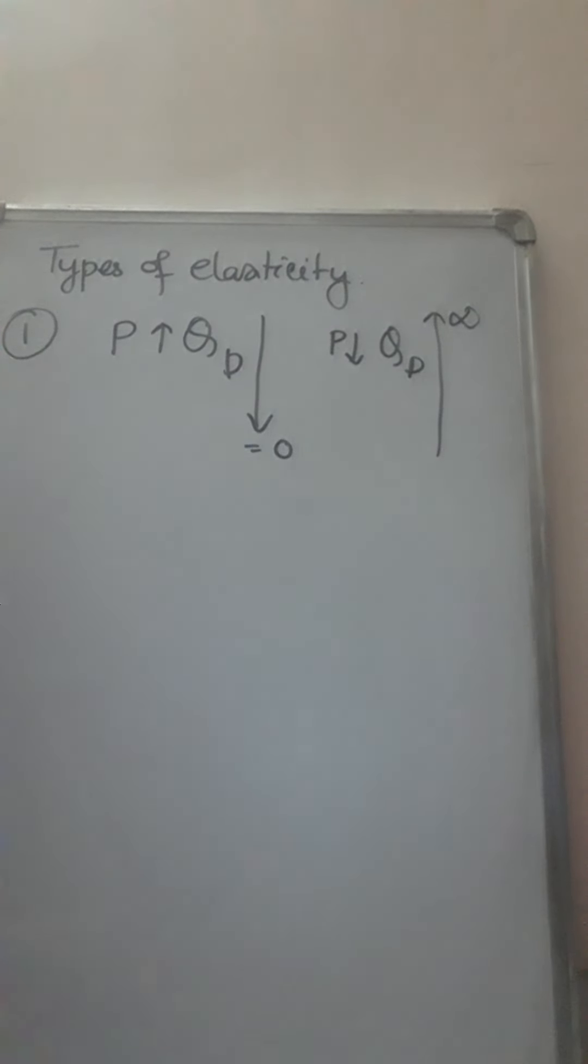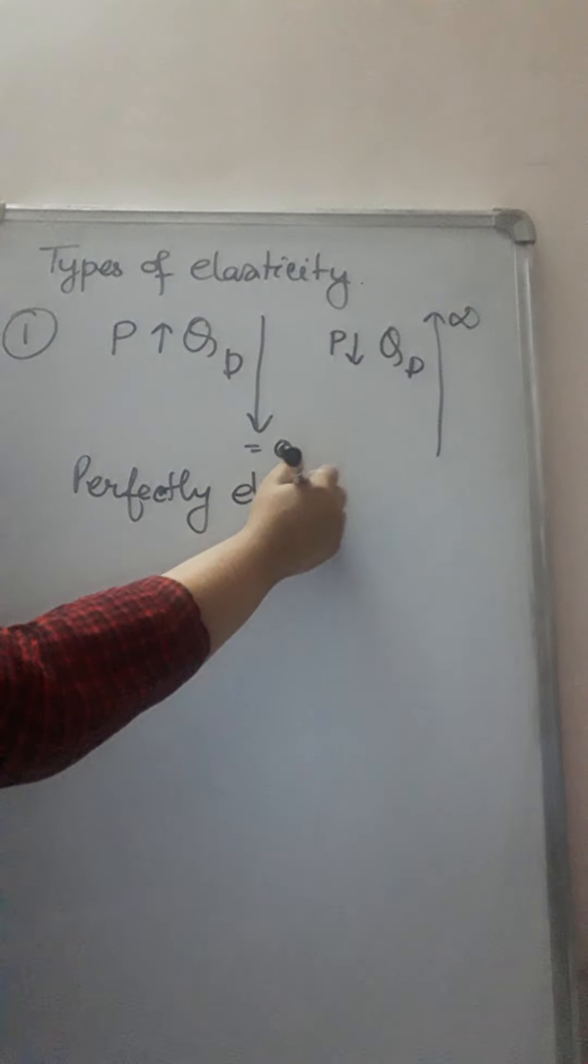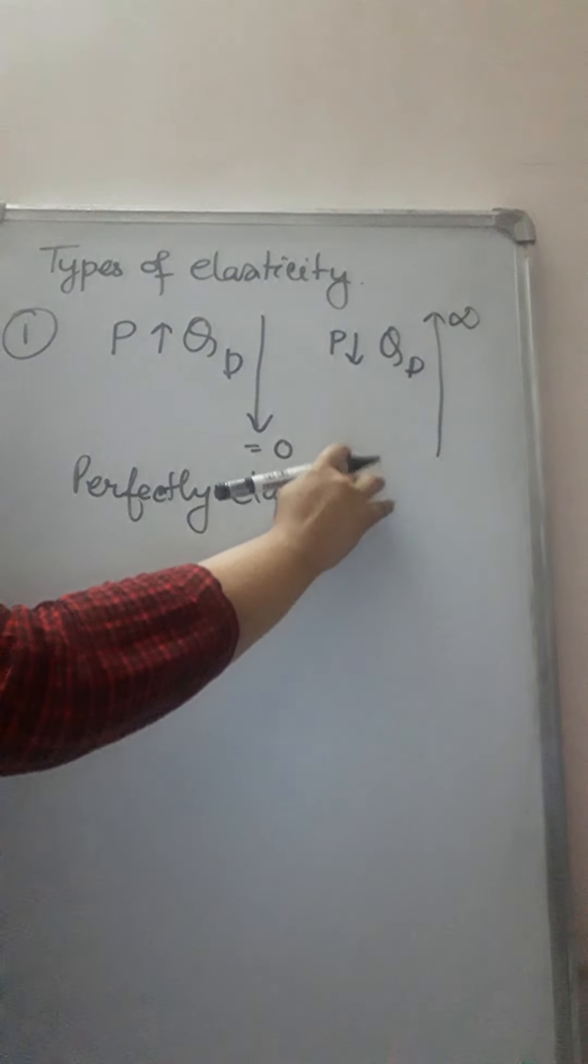This is a very abnormal condition. Due to a small price change, suppose from 2 to 3 rupees, the entire demand drops to 0. And due to a small drop in price, from 2 rupees to 1 rupee, there has been so much increase in demand that it has reached infinity. This is a very unusual or rare case. Demand is highly elastic, we even call it perfectly elastic, too much stretchable on either side.